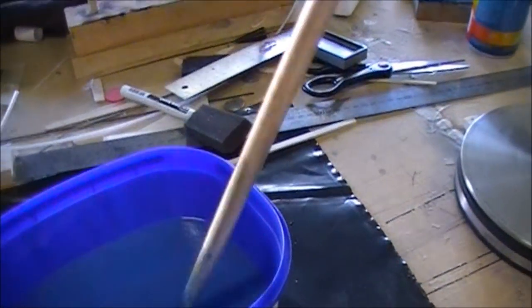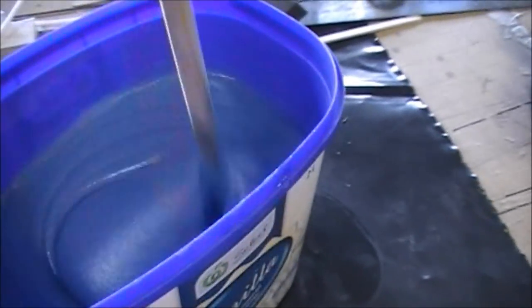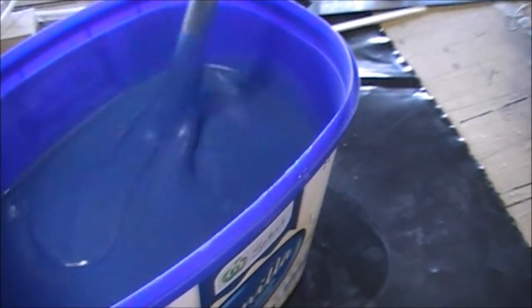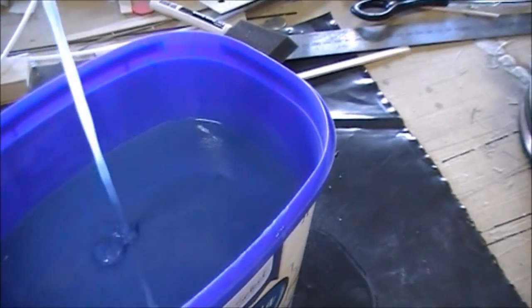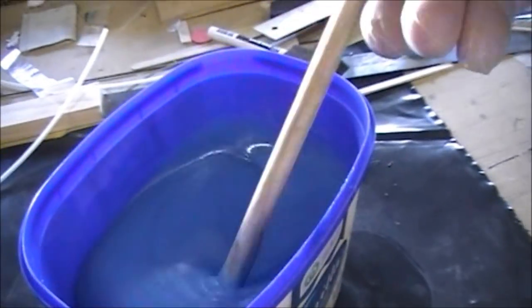This is the Corian and epoxy mix. As you can see, it should pour okay. That's 38% as per Tim's instructions.